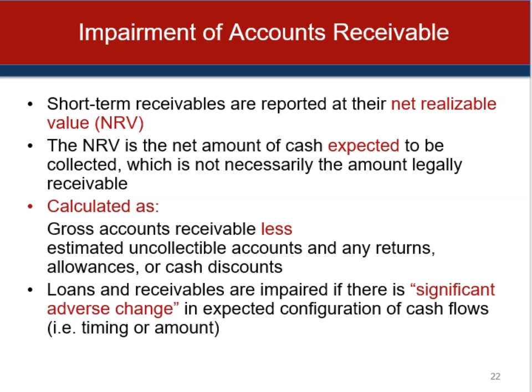To properly match expenses to sales revenue, it's sometimes necessary to establish additional allowance accounts as contra accounts to accounts receivable. If sales returns are expected to be significant, the most common allowance is the allowance for sales returns and allowances. Ideally, receivables should be measured at their present value when expected cash receipts require a waiting period. In practice, accountants generally ignore this for accounts receivable because the discount amount is usually not material. In subsequent periods, accounts receivable should be measured at amortized cost; however, where there is no interest element recognized, cost and amortized cost would be the same.